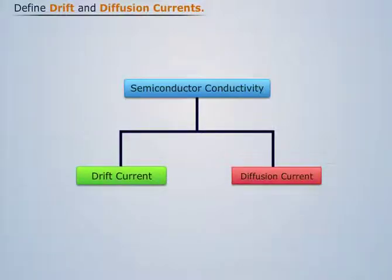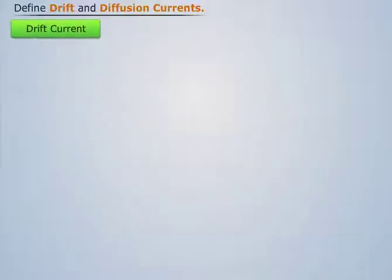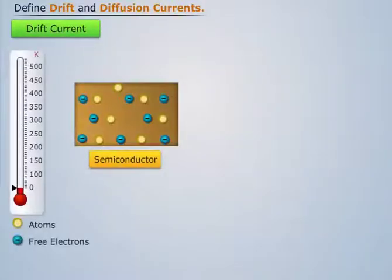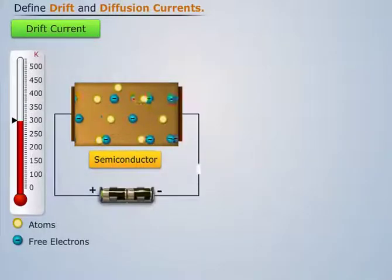Let's now discuss drift current. Consider a semiconductor at room temperature, that is 300 Kelvin. When a voltage is applied across it, the free electrons present inside the semiconductor move towards the positive terminal of the applied voltage.